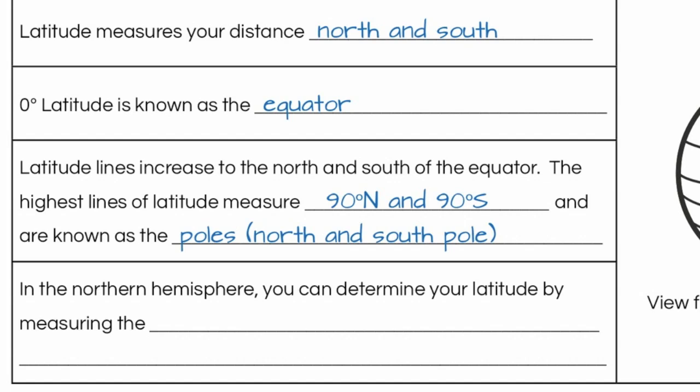Now in the northern hemisphere, we actually have a method for locating ourselves or at least determining our latitude using the stars. We're going to learn a lot more about this in class, but I want you to get in your notes for now. In the northern hemisphere, you can determine your latitude by measuring the altitude or the height of a star called Polaris. It's also known as the north star.